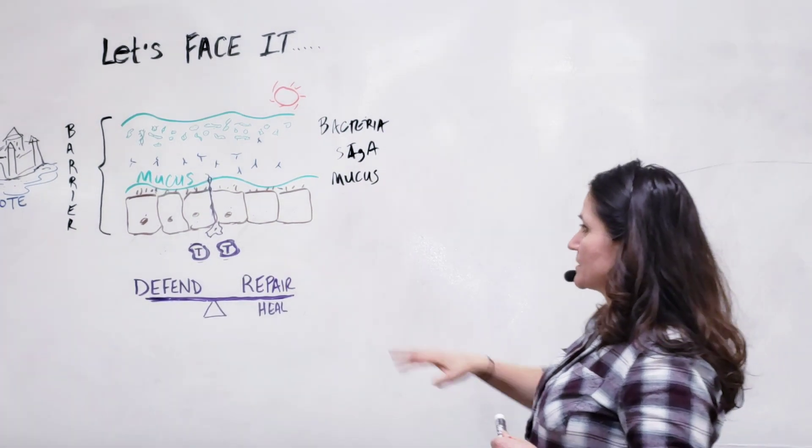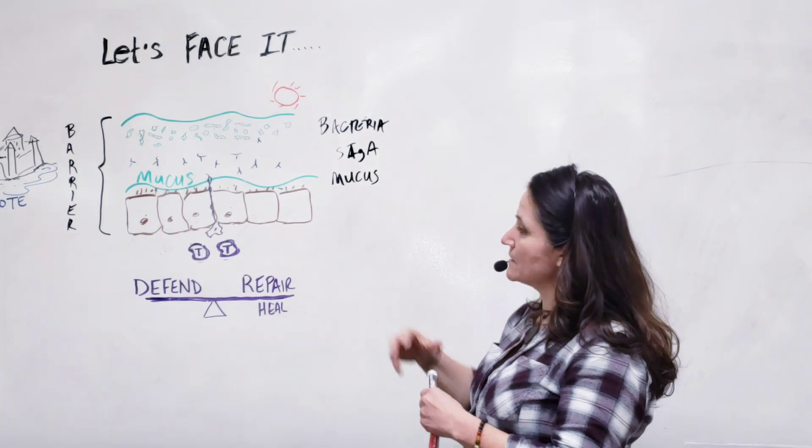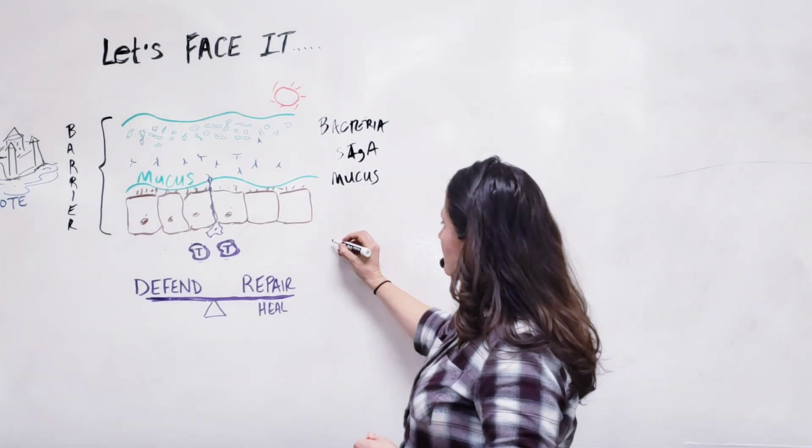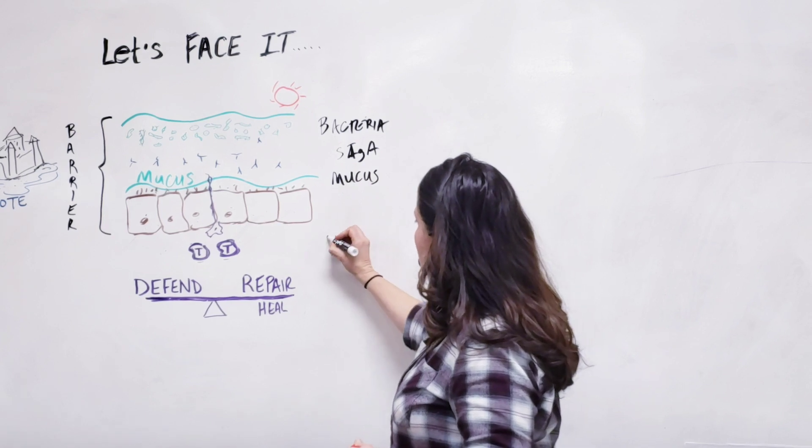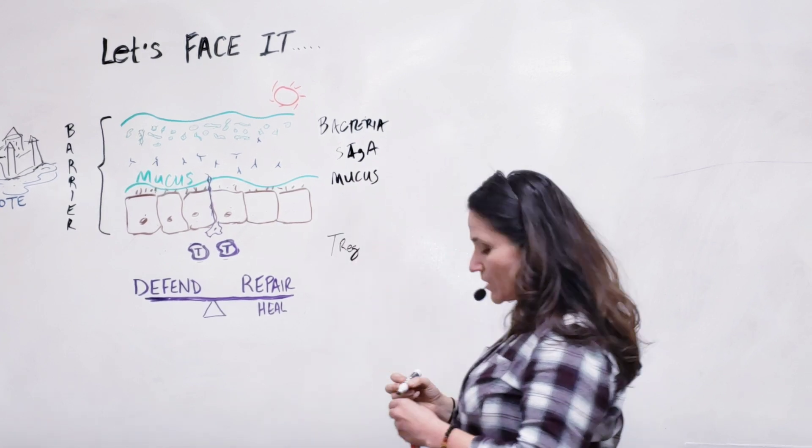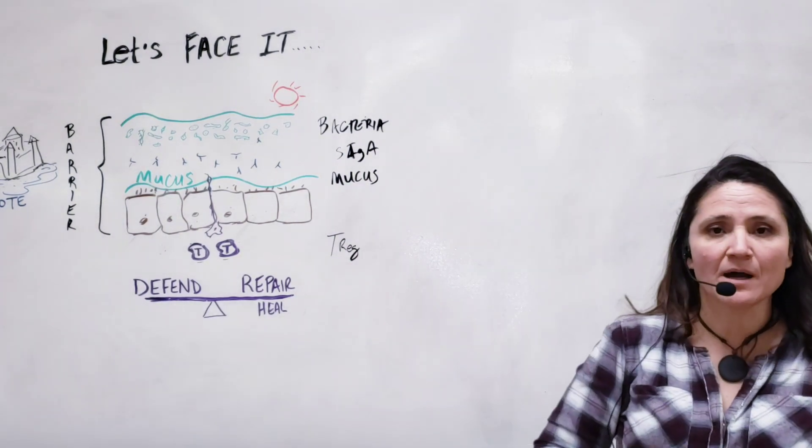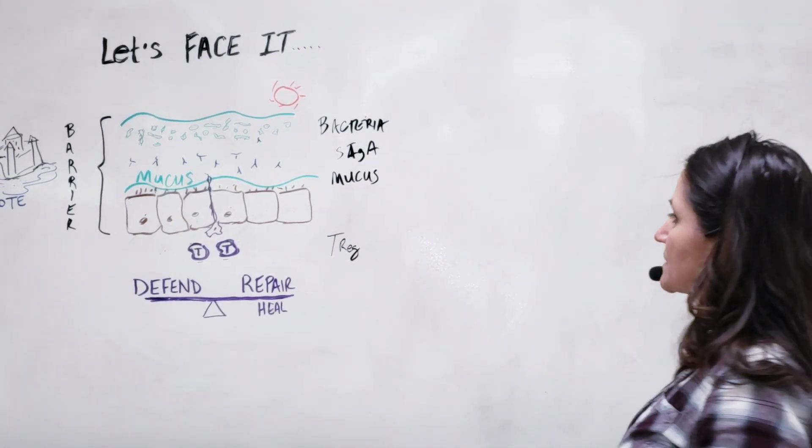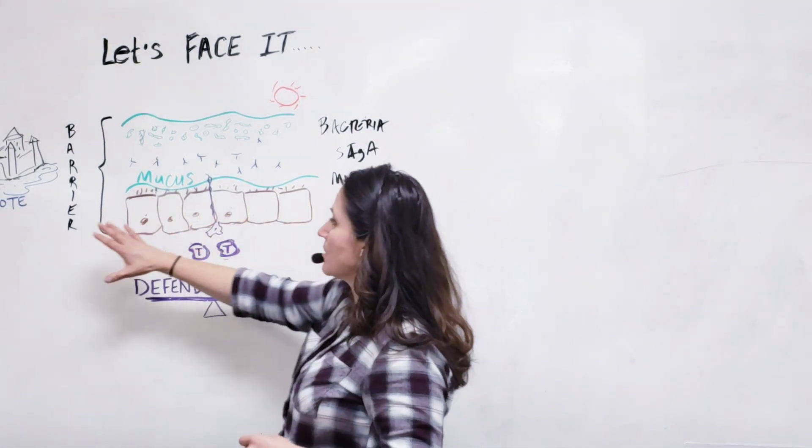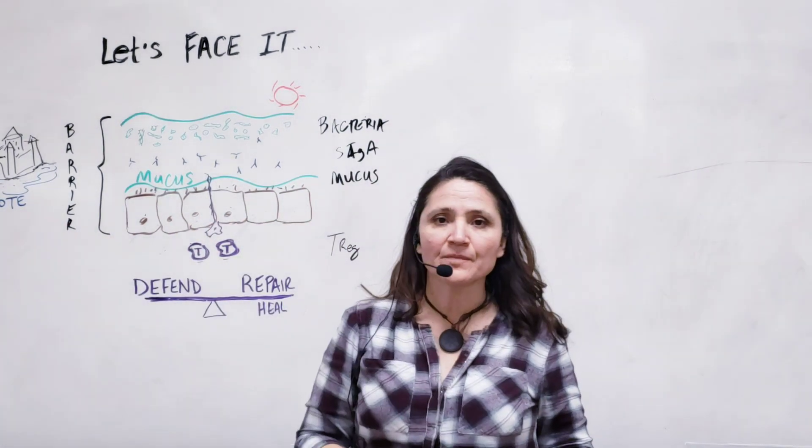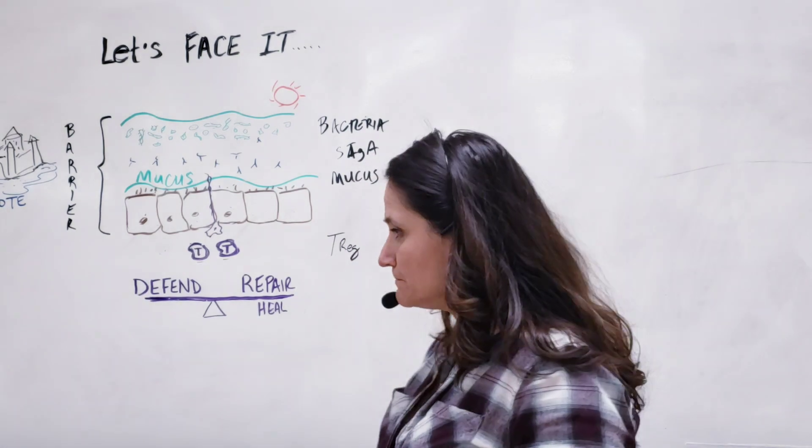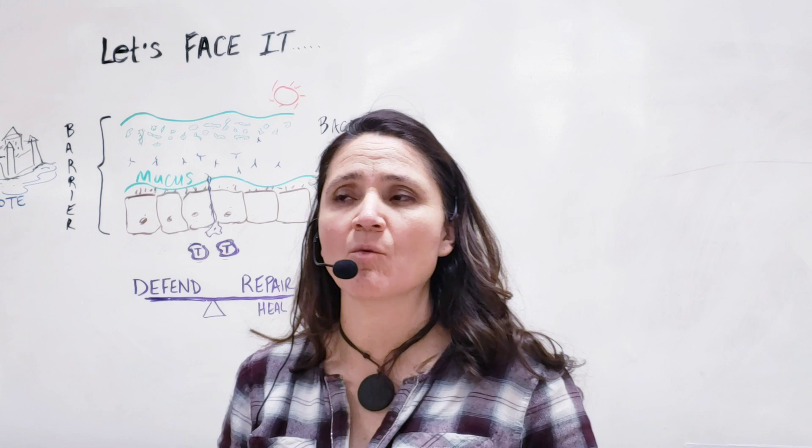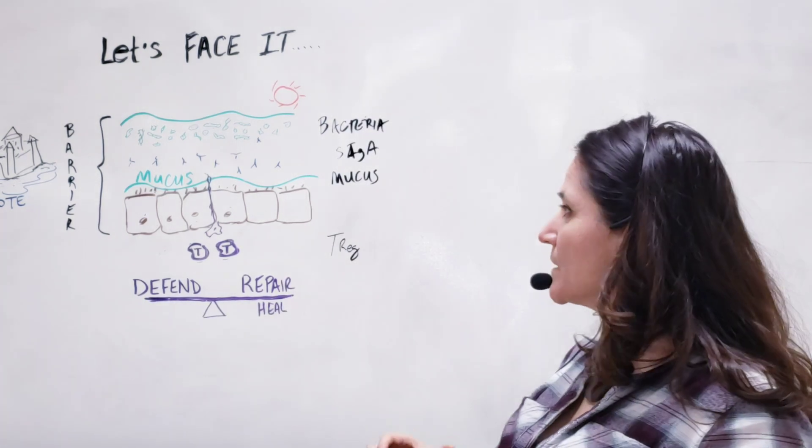The next layer is this epithelial cell, which is tightly held together to help protect us. And then the last important layer is the T regulatory cells. These are the ones that are actually going to step up and help protect us if there's any intrusion. And all this together acts like a moat around a castle.